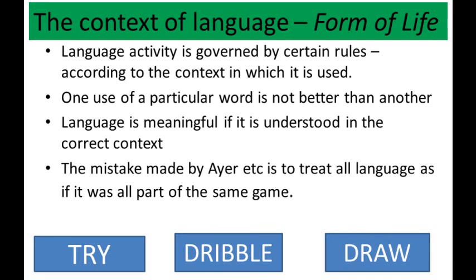Peter Padden's famous explanation of cricket to a foreigner illustrates the importance of knowing how the language works in context before trying to work out the meaning. Within the game of cricket the words 'in' and 'out' are used in a quite different way from how they might be used in poetry. It's a mistake to assume that the use of one word is better or more fundamental than another. If we want to know the meaning of a word or the meaning of language we should look at how it's used. As Wittgenstein called it: meaning is use.